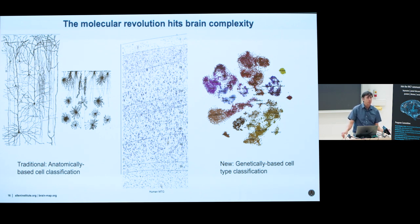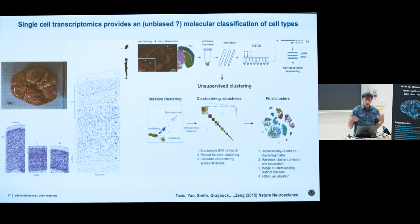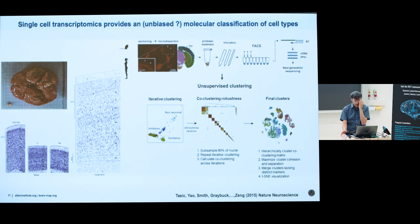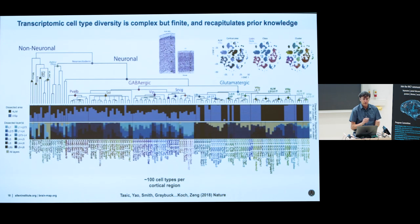Let me go back to the transcriptomic approach. If there's one technology very amenable to high-throughput profiling, it would certainly seem to be single-cell transcriptomics, whereby you can run these pipelines either with genetically modified organisms, or even in humans using nuclear DNA. This is essentially amplified, sequenced, and mapped, taking advantage of powerful mapping algorithms. One then clusters this data into finding putative groups or putative cell types.